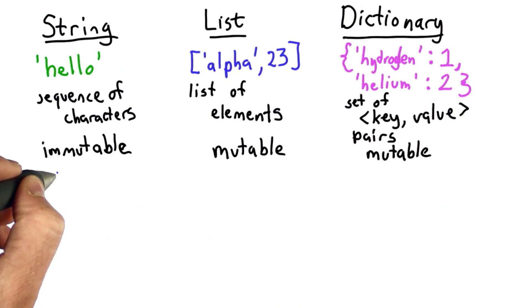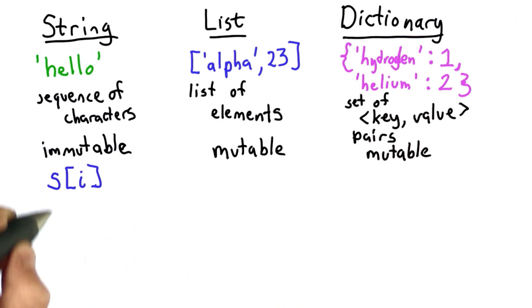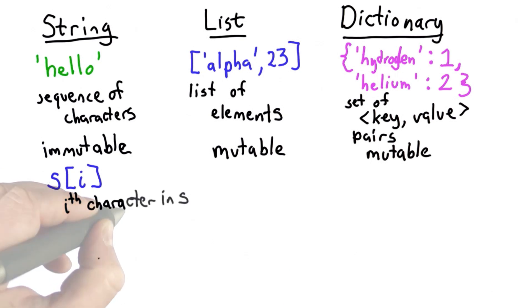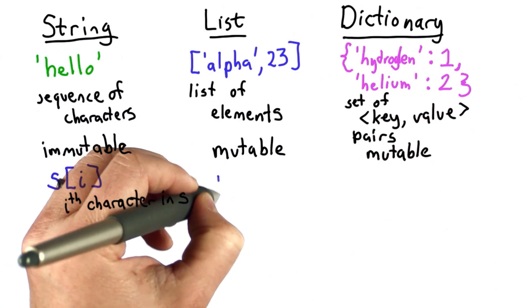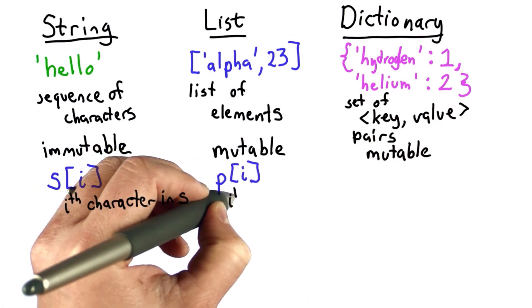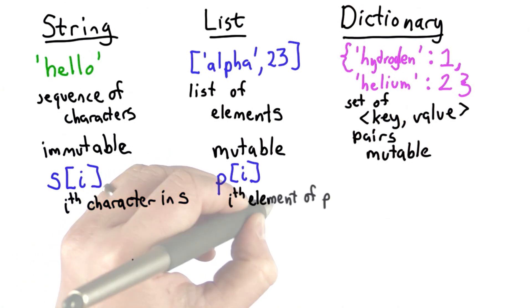We saw with strings, if s is a string, then we can do s index i. That will give us the i-th letter in string. With lists, we can do something very similar. If p is a list, we can do p index i to get the i-th element of the list.